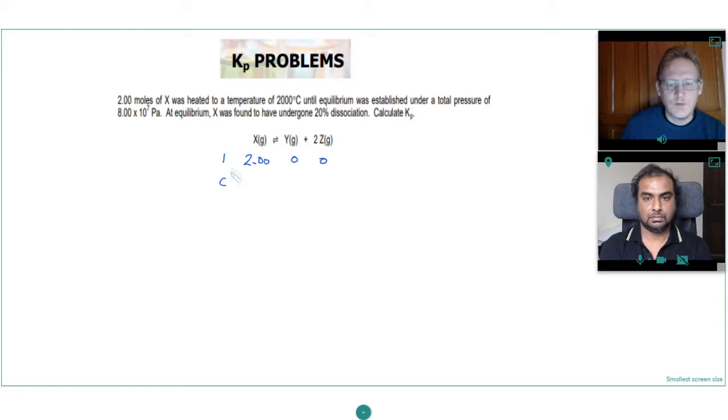The change we won't know yet, but it tells us at equilibrium X was found to have undergone 20% dissociation, so we know 20% of it has reacted.